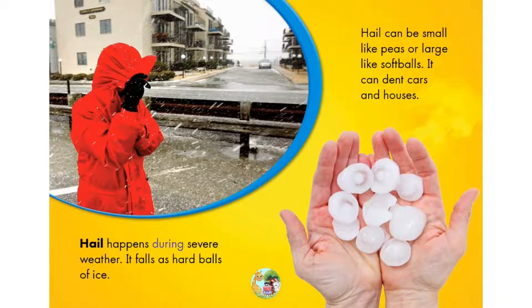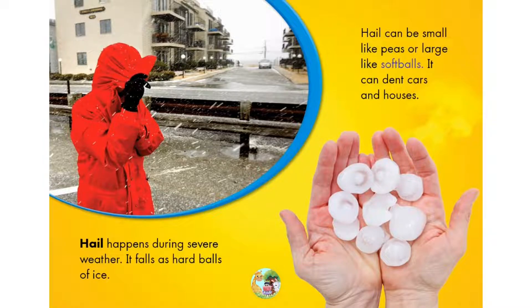Hail happens during severe weather. It falls as hard balls of ice. Hail can be small like peas or large like softballs. It can dent cars and houses.